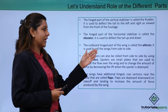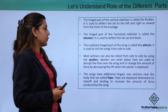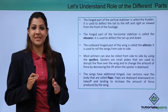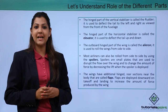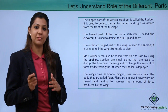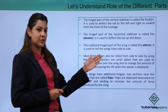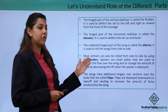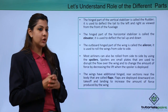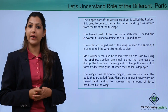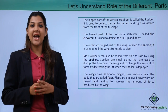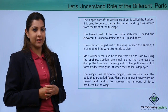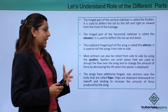The outboard hind part of the wing is known as ailerons, used to roll the wings from side to side — this is called yawing. Spoilers are small plates used to disrupt the flow over the wing and decrease lift. When spoilers are deployed, the cockpit crew uses controls in the cabin to engage them as needed, which helps change the speed of the aircraft.